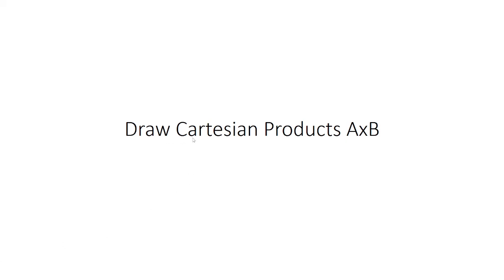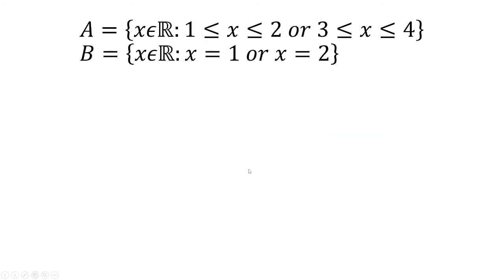In this video, we're going to be drawing Cartesian products given sets A and B. Set A is a set where X is a real number and X is between 1 and 2, or X is between 3 and 4. Set B has X as a real number; it's either 1 or 2.